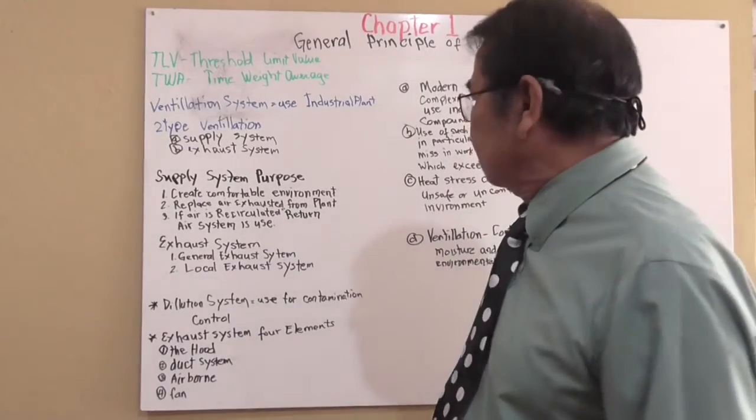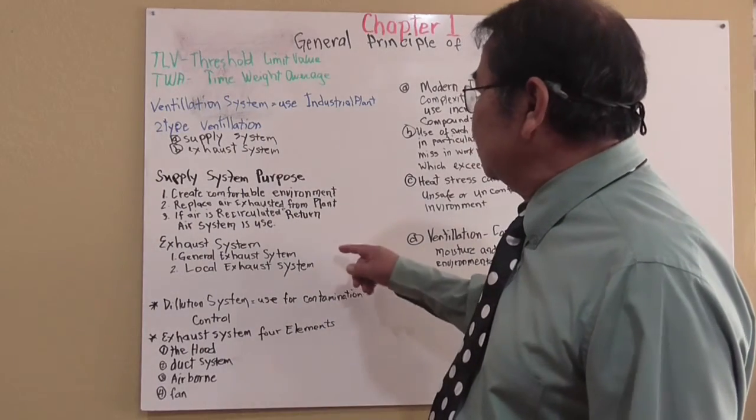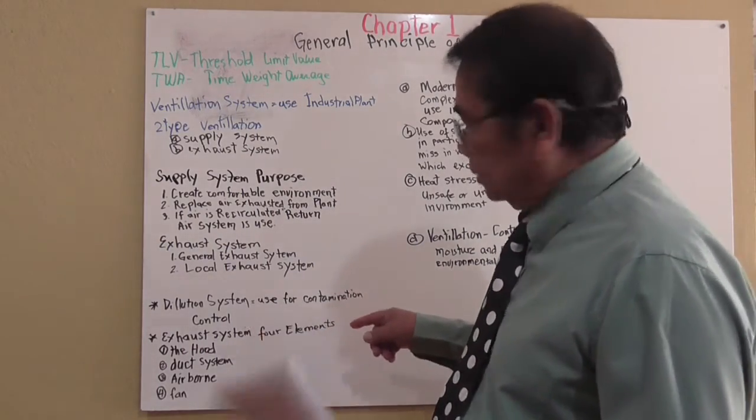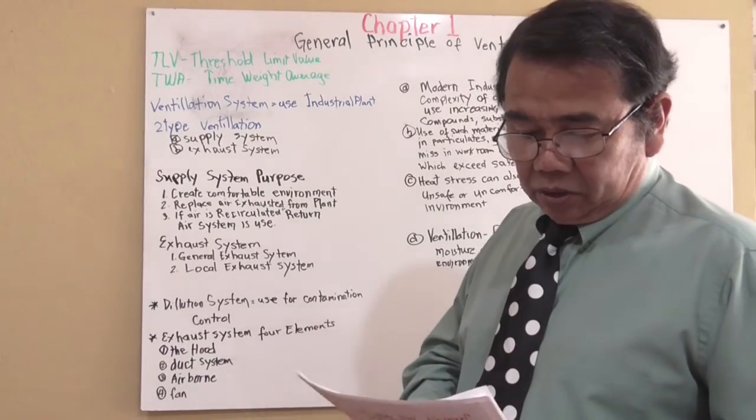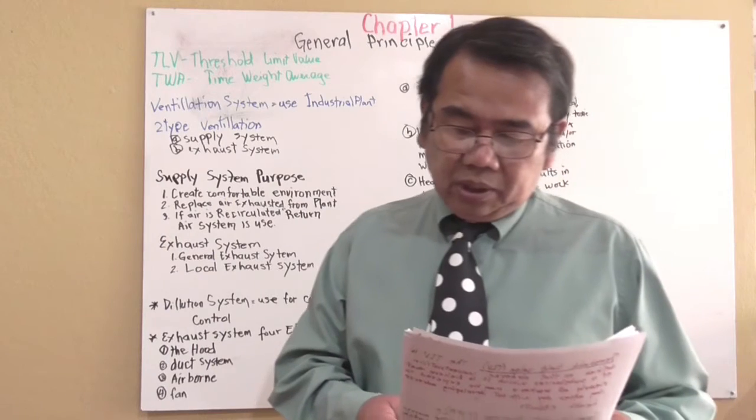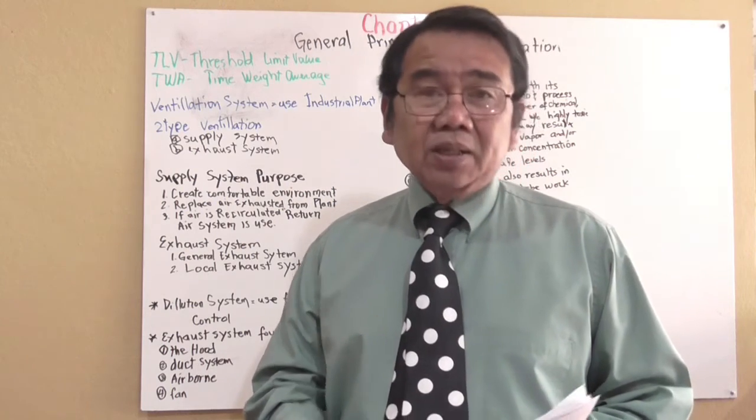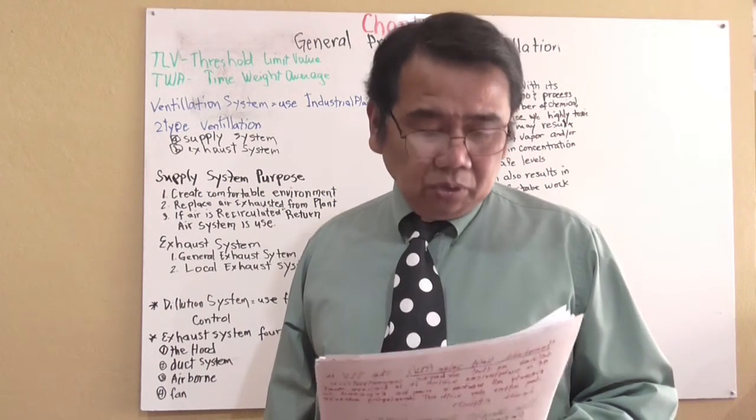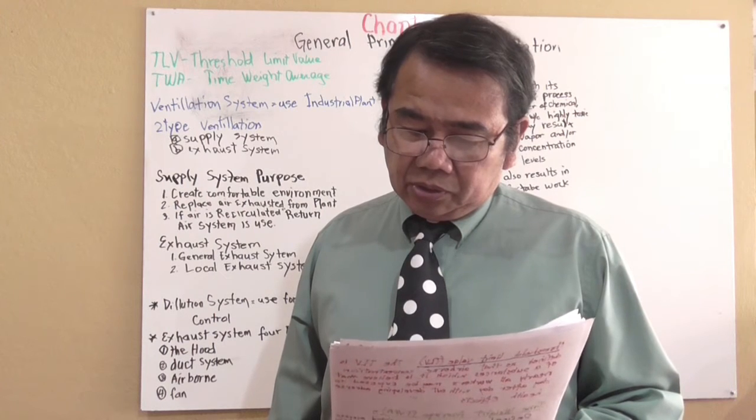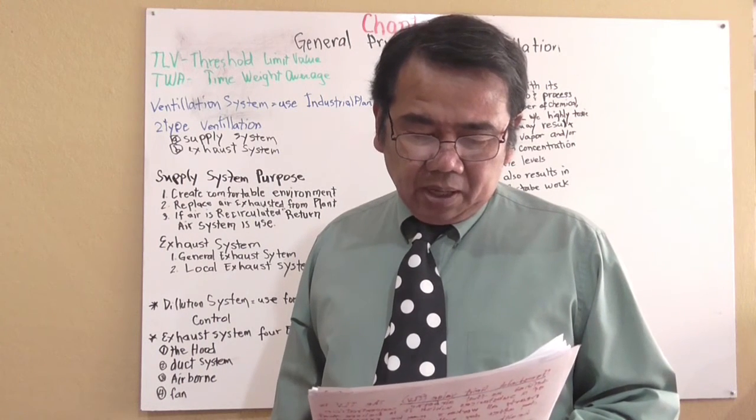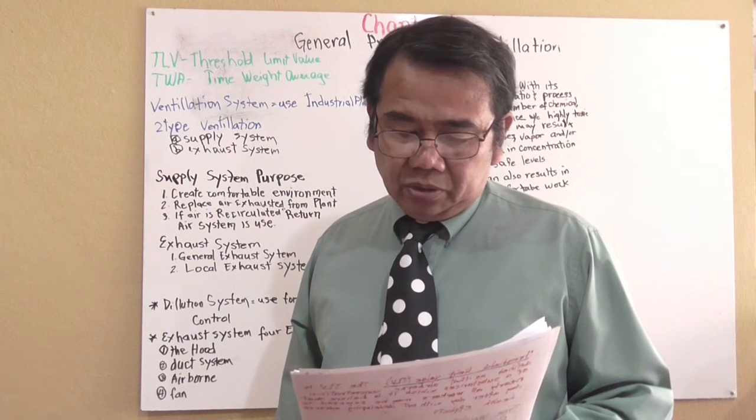Exhaust system: we had two types, the general exhaust system and the local ventilation system. Exhaust ventilation systems are classified as two generic groups. General exhaust system can be used for heat control and or removal of contamination generated into the space by flushing out a given space with a large quantity of air.